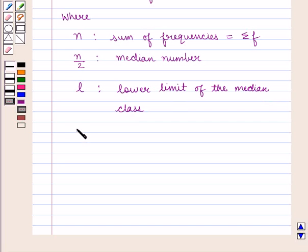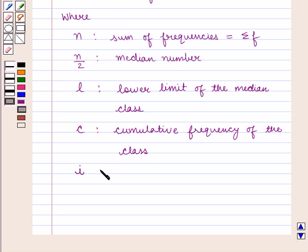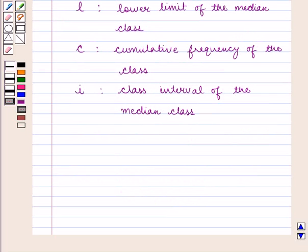c is the cumulative frequency of the class just lower than the median class. i is the class interval of the median class, and f is the frequency of the median class.